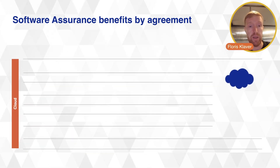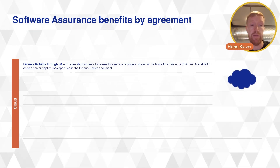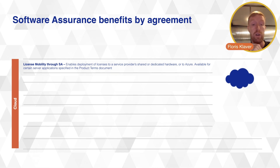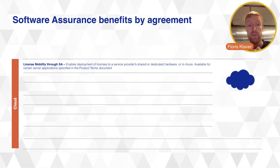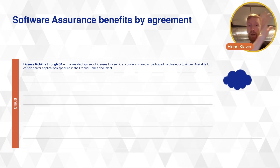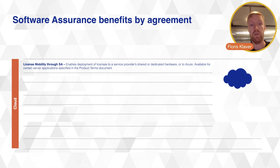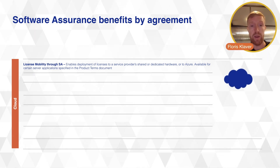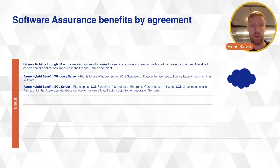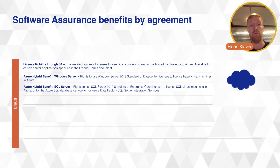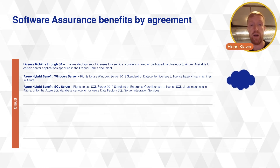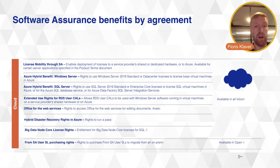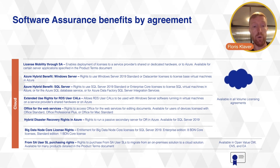For cloud scenarios, License Mobility through Software Assurance lets you take your current licenses and move them to a hoster, a third party, or even Azure. For example, with SQL Server and Software Assurance, you can move that to an Azure VM without re-licensing. Azure Hybrid Benefit for Windows Server and SQL Server also requires Software Assurance, allowing you to reduce costs in Azure. Additionally, Extended Use Rights for RDS User CALs let you bring them into the Azure cloud, among many other benefits that support your journey to the cloud.